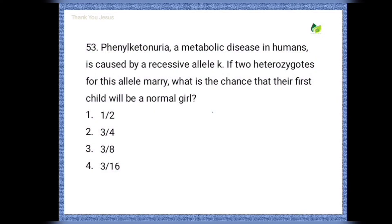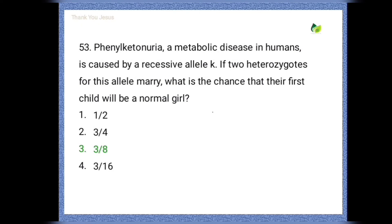Phenylketonuria, a metabolic disease in humans, is caused by a recessive allele. If two heterozygotes for this allele marry, what is the chance that their first child will be a normal girl? Options are 1/2, 3/4, 3/8, 3/16. The correct option is 3/8.